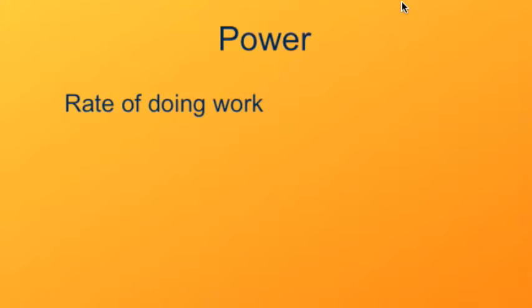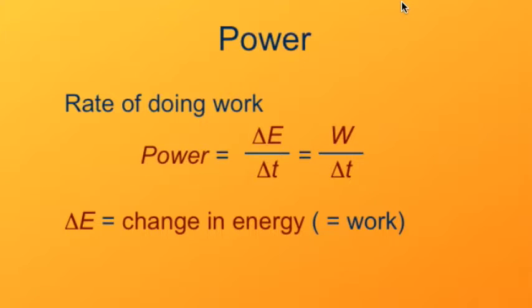Power is defined as the rate of doing work, or the rate of changing the object's energy. Work is one of the ways we have of changing the energy of something. So here the delta E is the change in energy, or the work done on the object, and delta T is the time interval during which this happens.